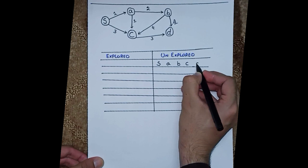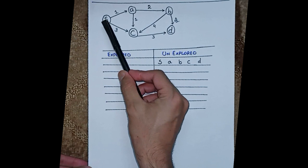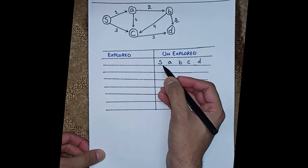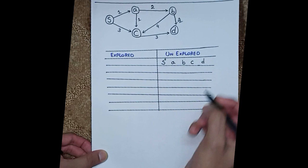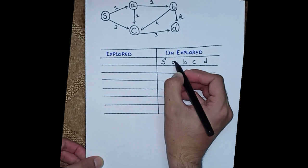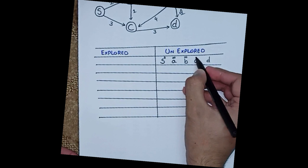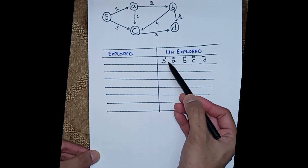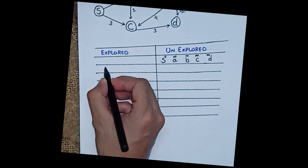I am starting from S — S is the source here. So first I stand at S. What is the distance between S to S? Since it is the same node, the distance is 0. At this first step, all other distances will be infinity. Through all these, which is the smallest distance? The smallest distance is S, so I make S as explored and write it in the explored column.